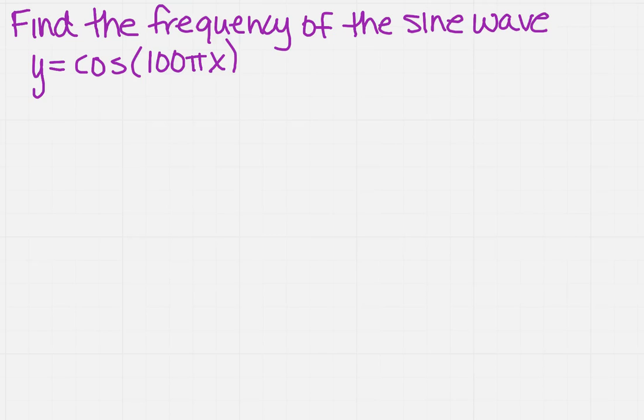We want to find the frequency of the sine wave y equals cosine of 100πx. How are we going to do that? We need to know how to find the frequency. Frequency equals 1 over the period.